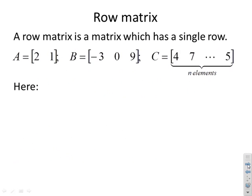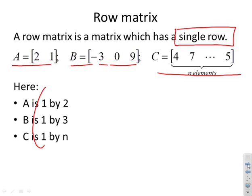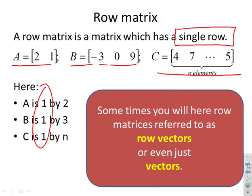What's a row matrix? A row matrix is a matrix which has a single row. Here you'll see that A has just one row, B has just one row, and C has just one row. In this case A is 1 by 2, B is 1 by 3, and C is 1 by N. In all cases the row dimension is 1. Sometimes row matrices are referred to as row vectors, or even just vectors — you need to be aware of this.